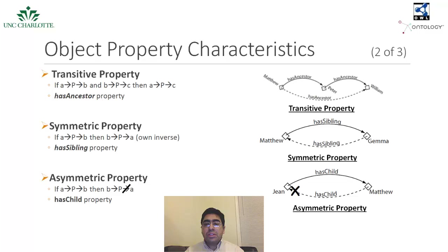Transitive properties are very useful to automatically infer the chain of relations among multiple individuals. If a transitive property links A with B and also B with C, then this characteristic will automatically link A with C through transitive inference, as shown in this figure for the transitive property has ancestor. If the individual Matthew has an ancestor Peter, and Peter has an ancestor William, then we can infer that Matthew has an ancestor William.